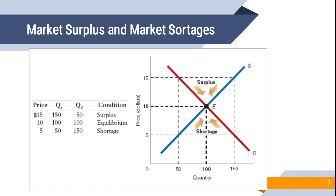Below the equilibrium we have shortage. At low prices, 150 people want to buy because prices are too low and they feel encouraged. But few sellers are available — they prefer to wait for prices to rise. When buyers are in the market but products are unavailable, buyers start offering higher prices to get the product. This pushes prices upward toward the equilibrium of price 10 with 100 quantities available.